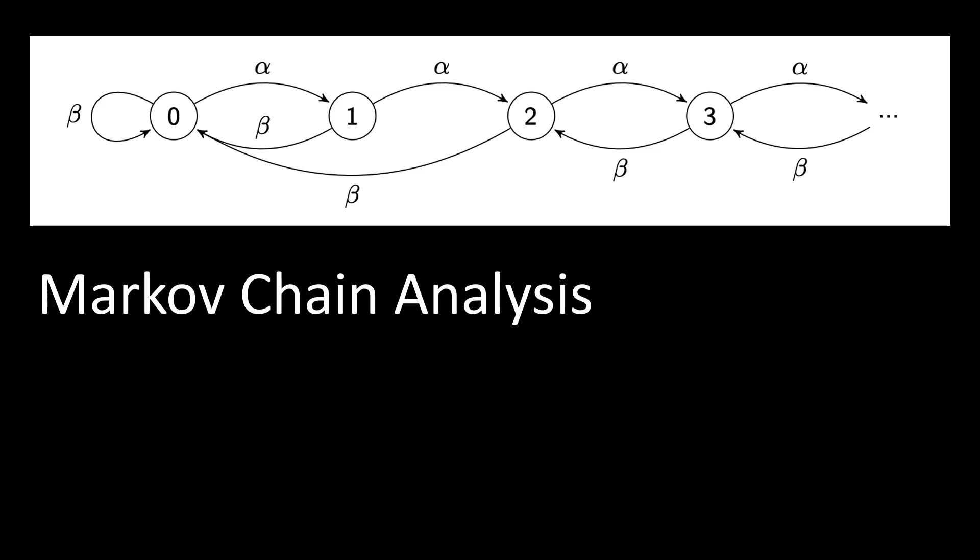Each state marks how many blocks the attacker is secretly in the lead. In our example before, the system started out in state 0 with only a yellow block. Then the attacker found three blocks. If the attacker finds a block, we call this an alpha event. Each alpha event increases the advantage of the attacker by one more block, until we are in state 3.